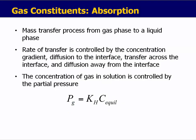The first mechanism, absorption, is defined as mass transfer from the gas phase to a liquid phase. The rate of transfer is controlled by the concentration gradient, diffusion to the interface, transfer across the interface, and diffusion away from the interface.